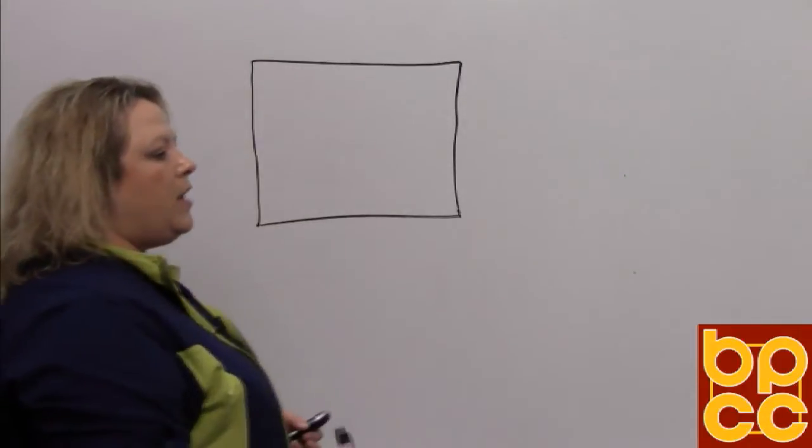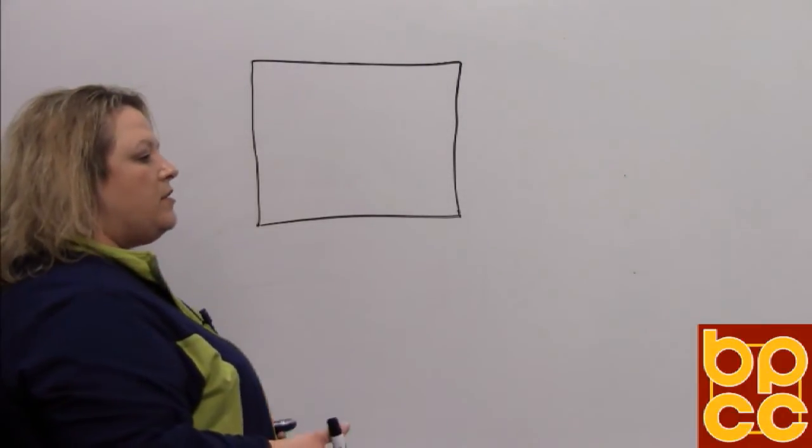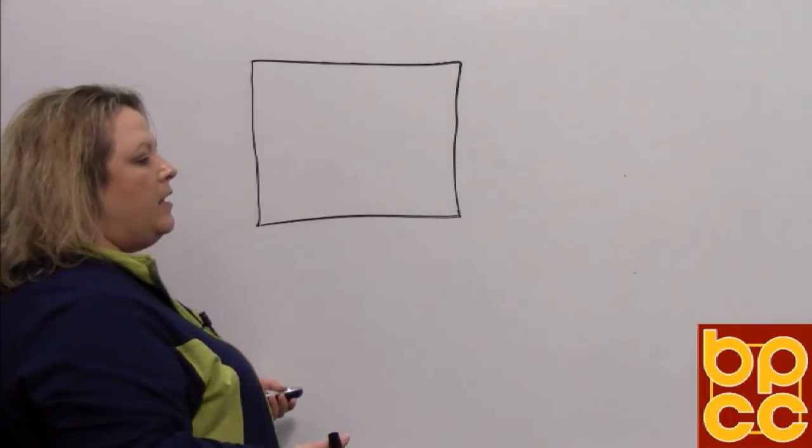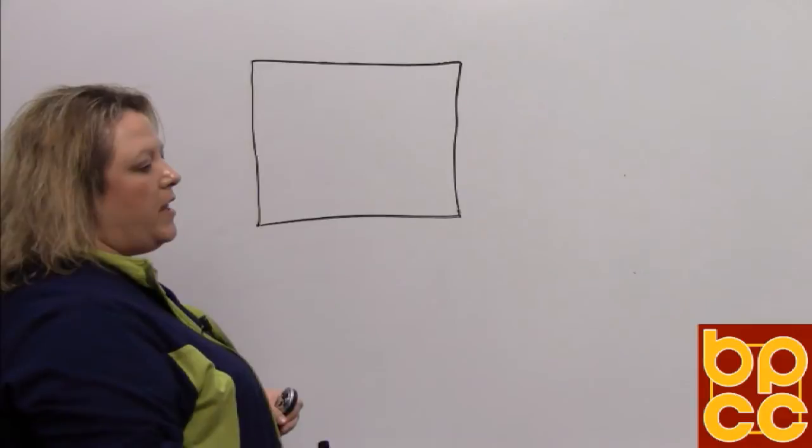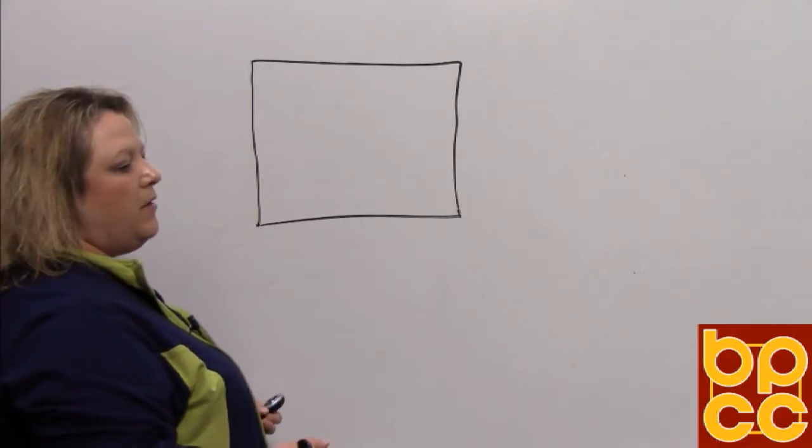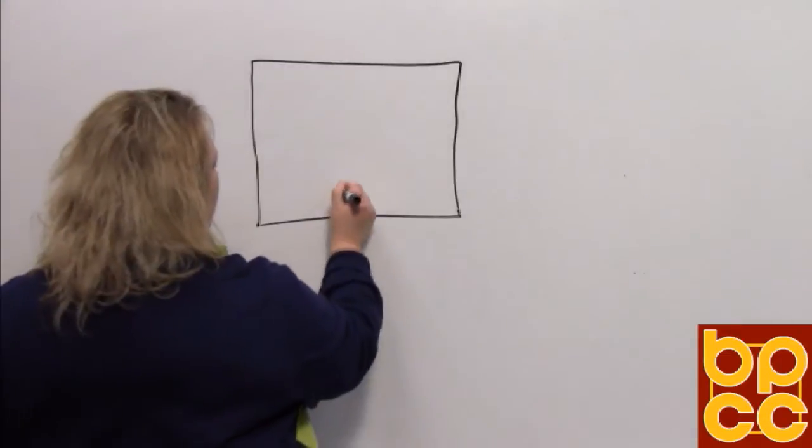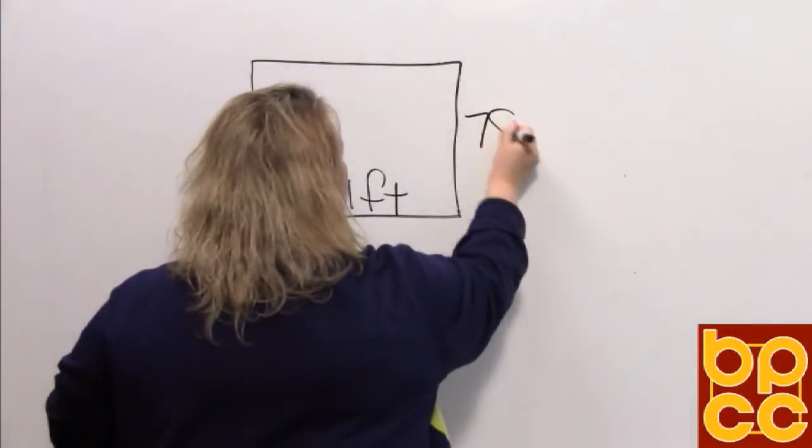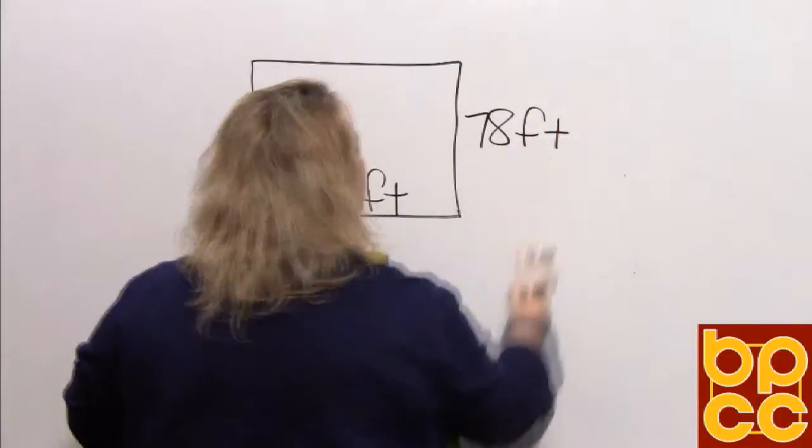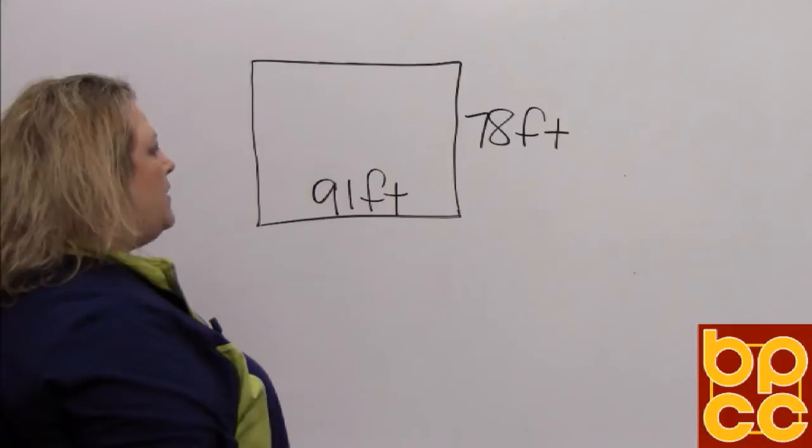And whenever you're solving a word problem, it is really good to go ahead and draw a picture so that you can visually see the measurements that you're going to be using. So this is our rectangular backyard and we have measurements of 91 feet long and 78 feet wide. So we want 91 feet long, 78 feet wide. And when we find the perimeter, all you have to do is add the sides together.